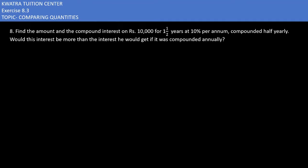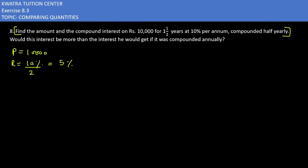Starting with question eight: find the amount and compound interest on rupees 10,000 for one and a half years at 10% per annum compounded half yearly. For half yearly calculation, the principle is 10,000, rate is 10%, and since it is compounded half yearly, we divide the rate by two, giving us 5%.